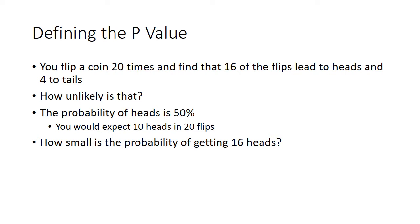Not every result is going to be like that, but as you do the experiment over and over again, you should get close to 50%. So the question is, what is the probability of getting 16 heads like we did in this first experiment? We can use what we call p-values to determine how likely it is that a value such as getting 16 heads is due to random chance or is it due to something else.